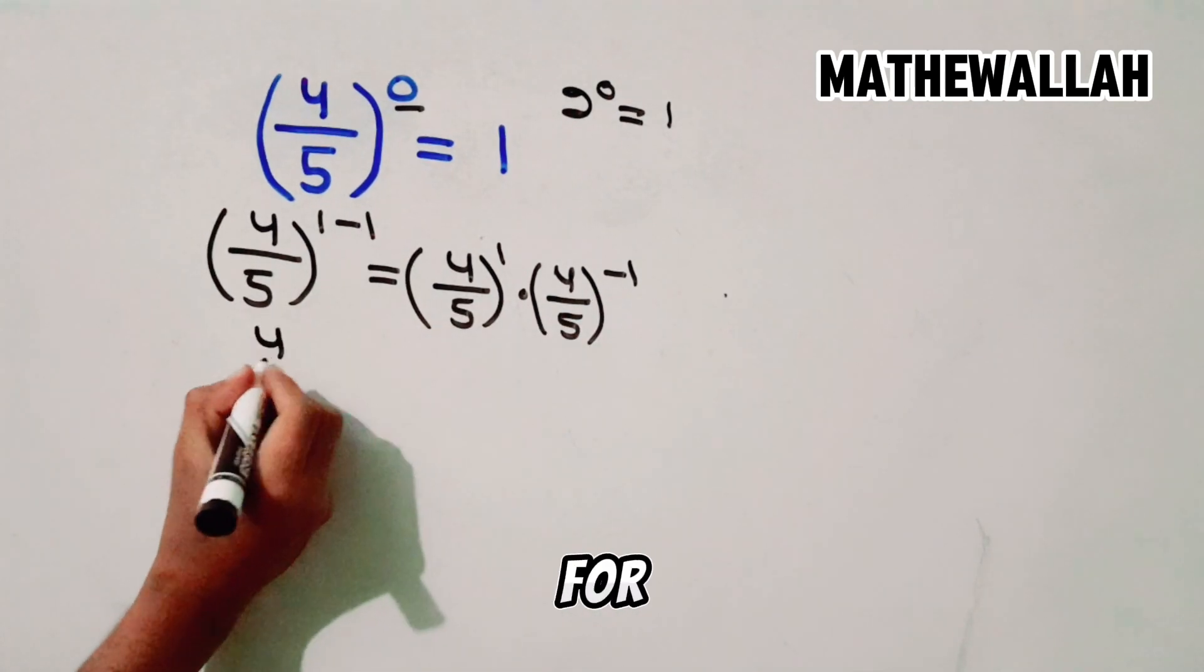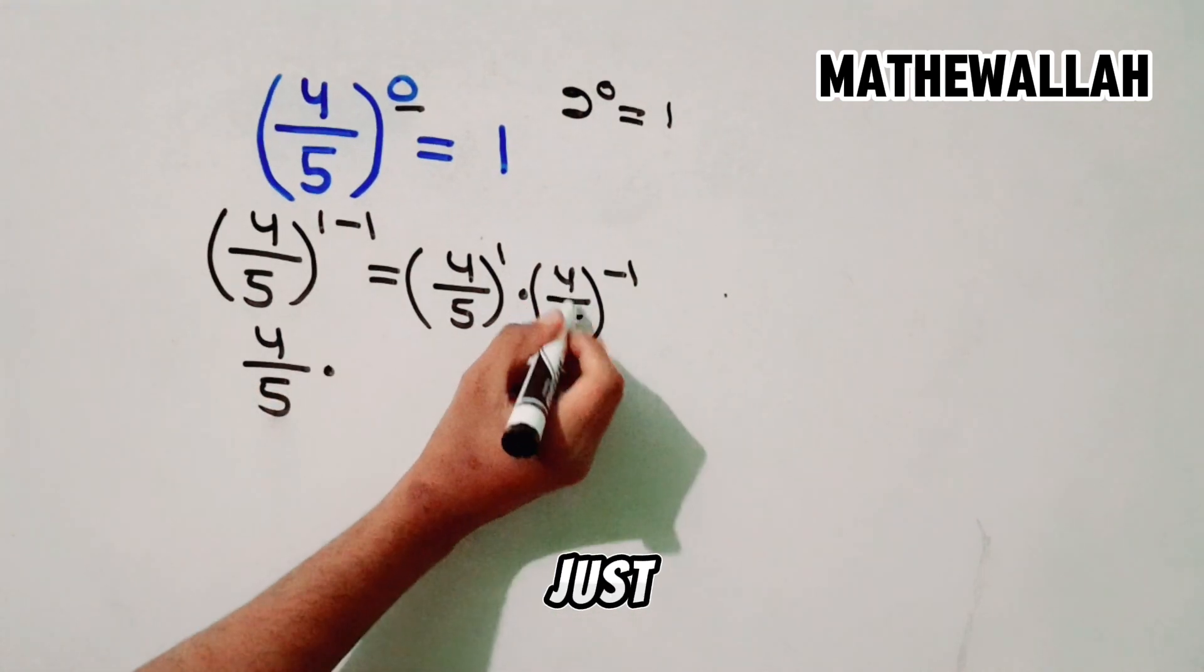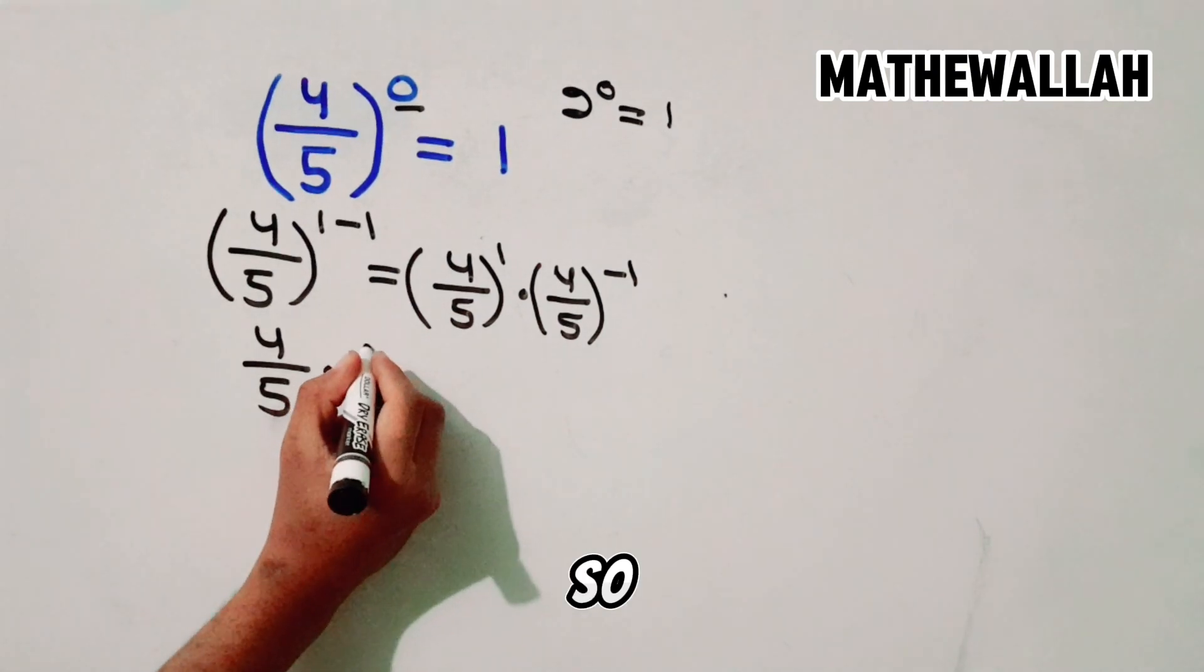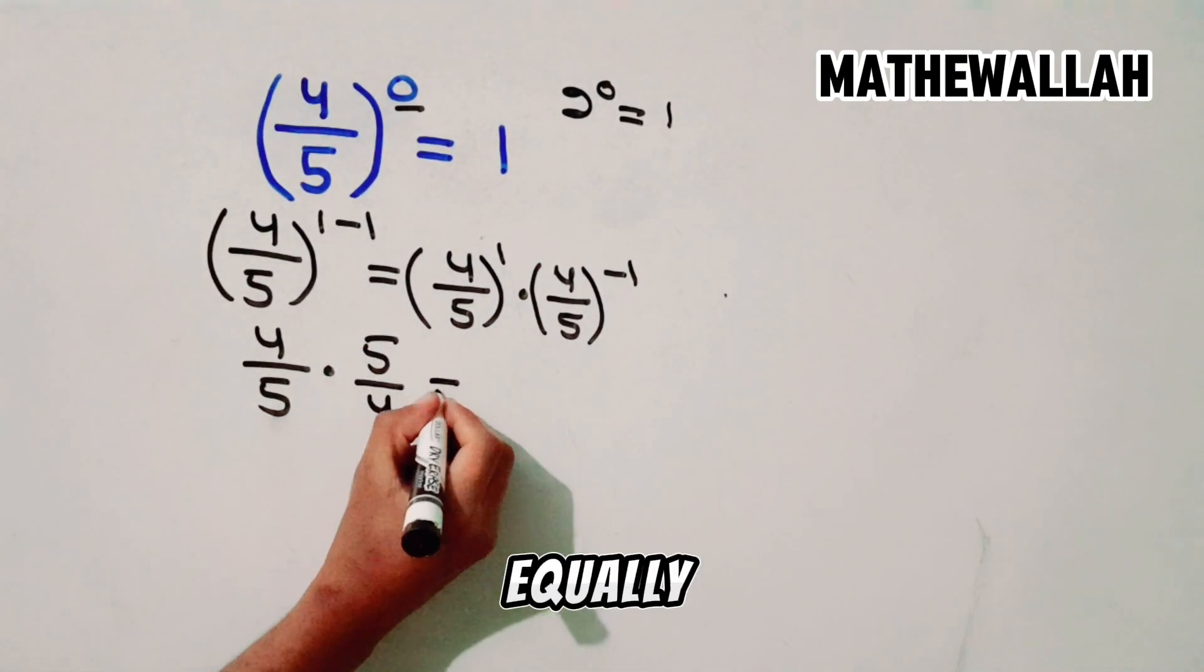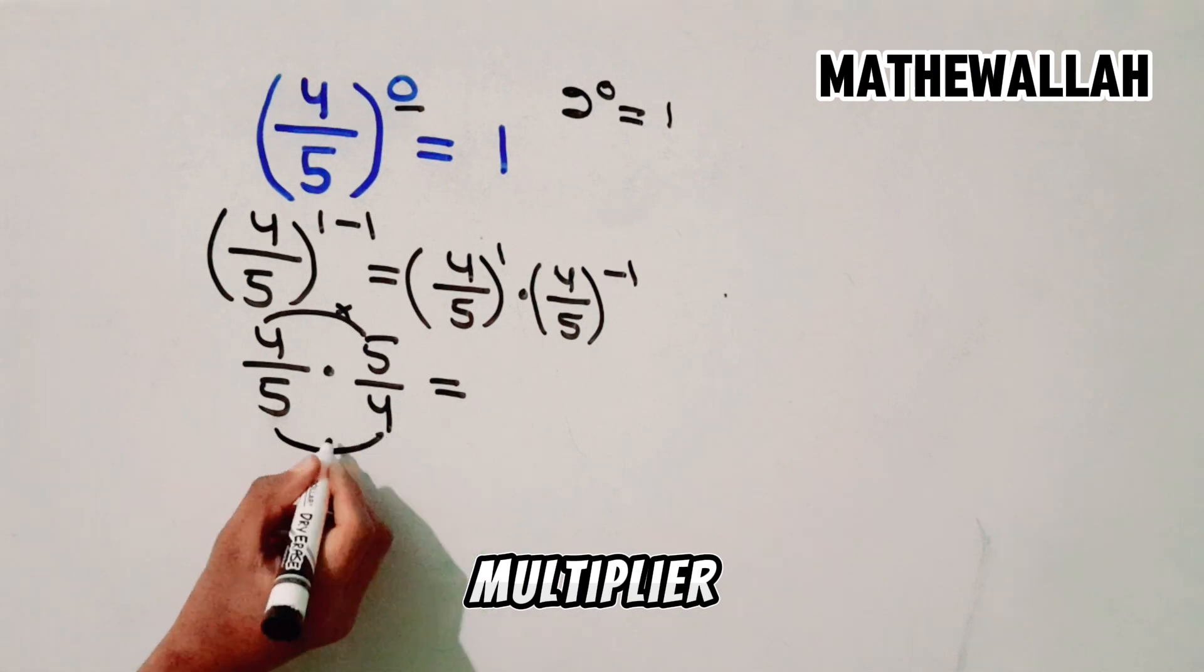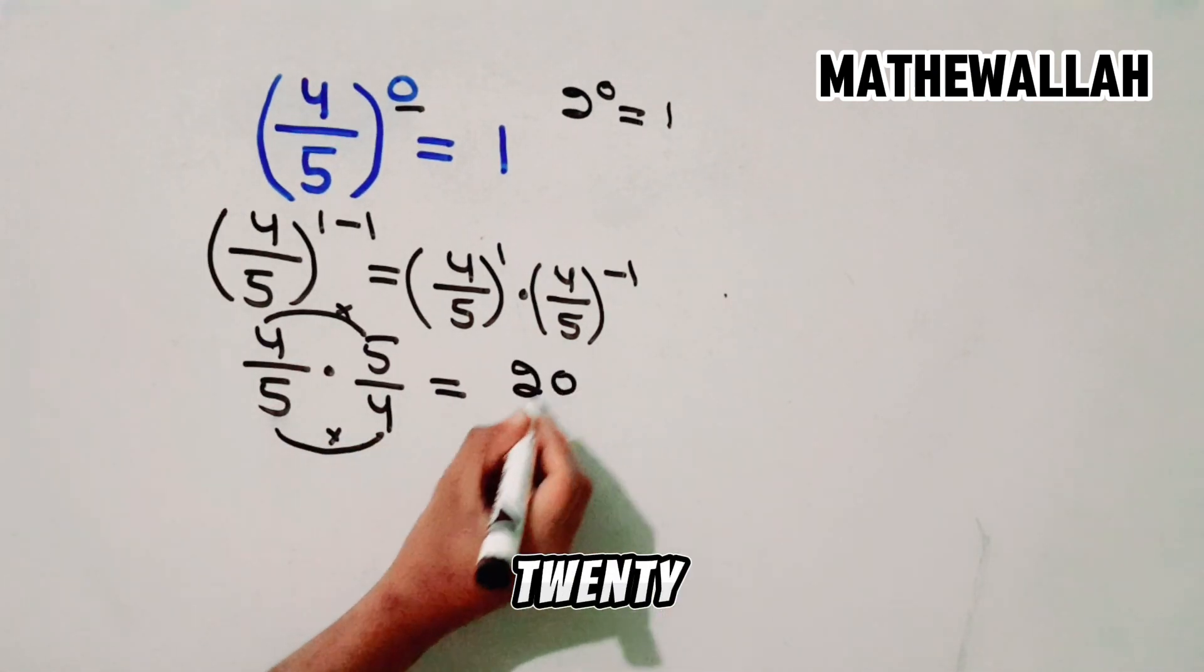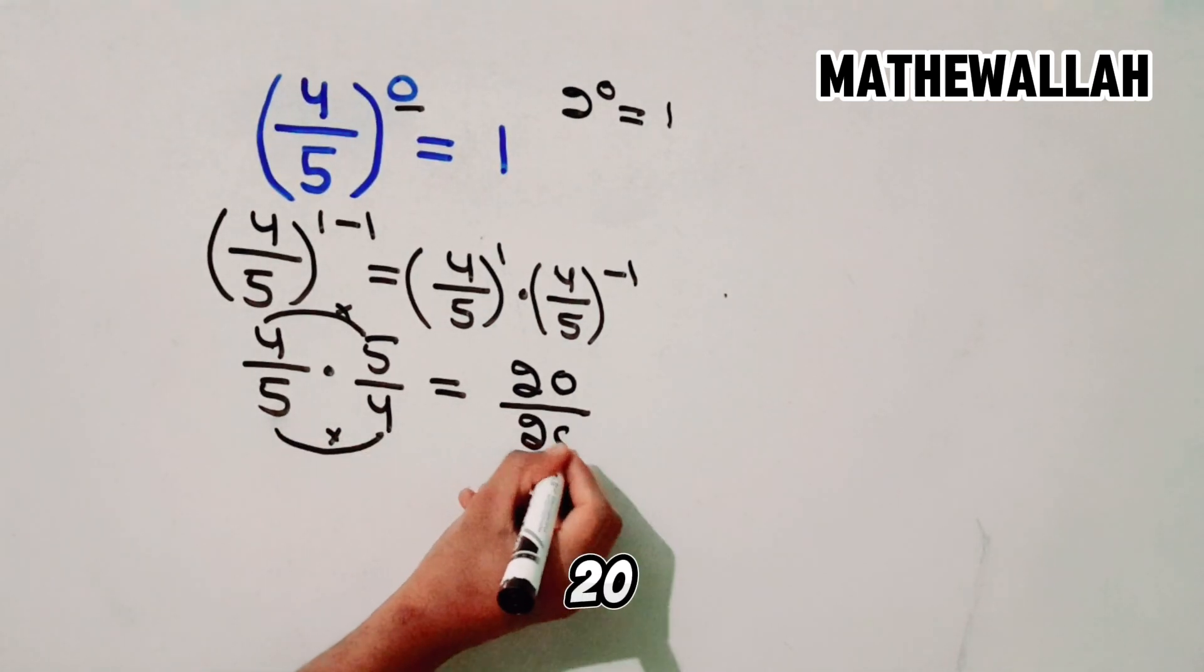So we write this as 4 upon 5 multiply by, we just flip the numerator into denominator. So it becomes 5 upon 4 is equal to, we just multiply this. So 4 multiply by 5 is equal to 20 divided by 5 multiply by 4 is equal to 20.